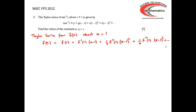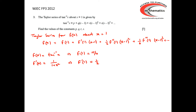We have f(x) = tan⁻¹(x), so f(1) = tan⁻¹(1), which is π/4. The derivative f'(x) is 1 over (1 + x²), so the value of f'(1) is 1 over (1 + 1²), which is a half.